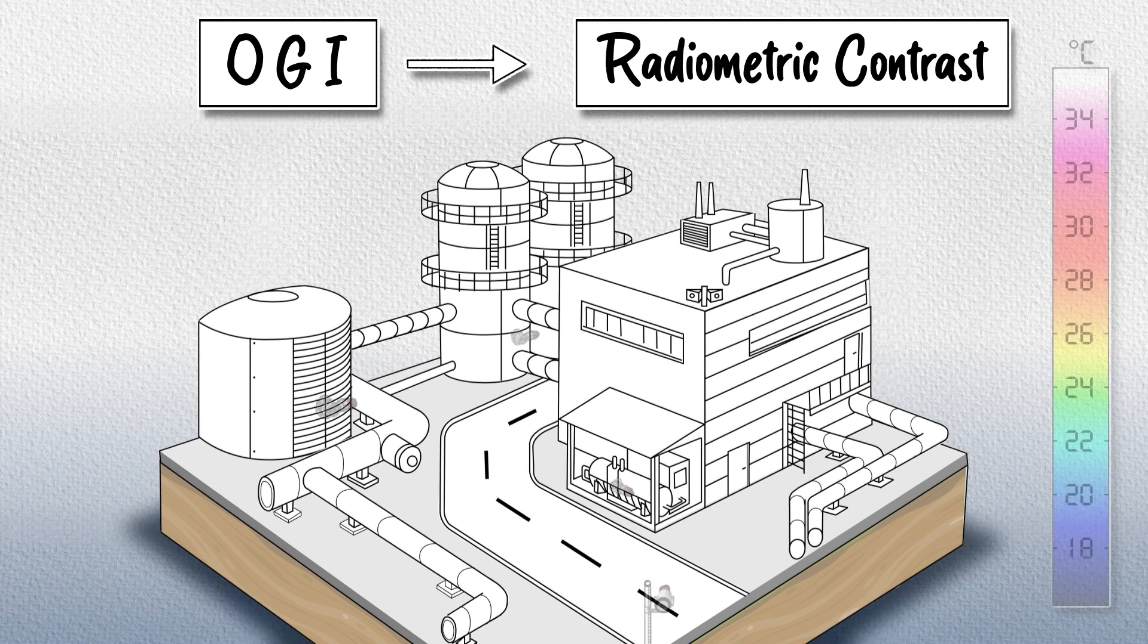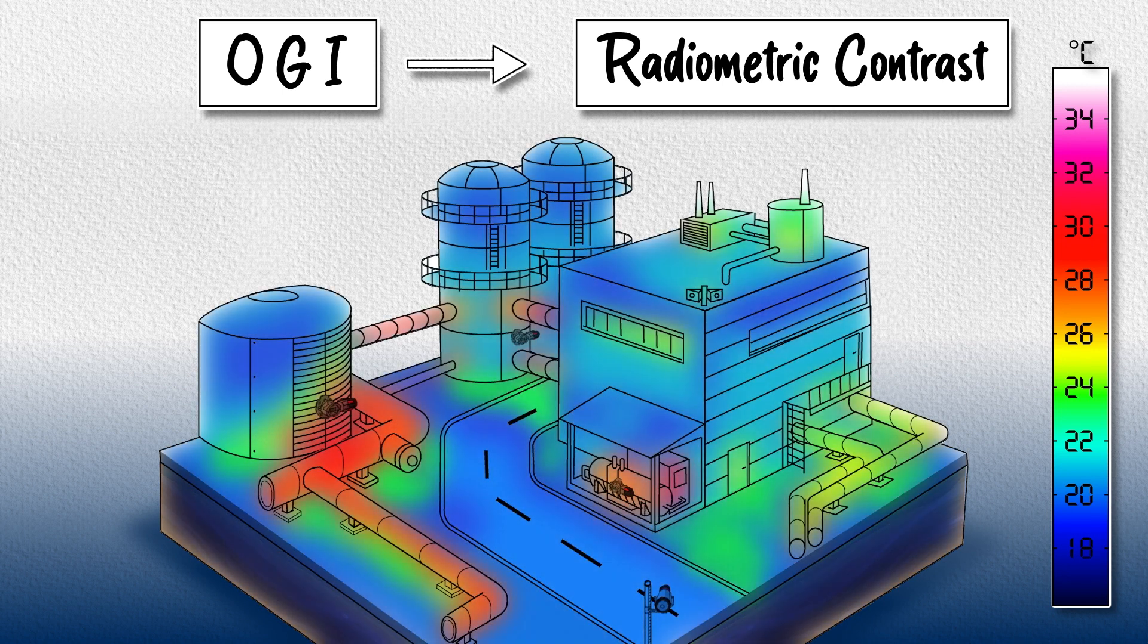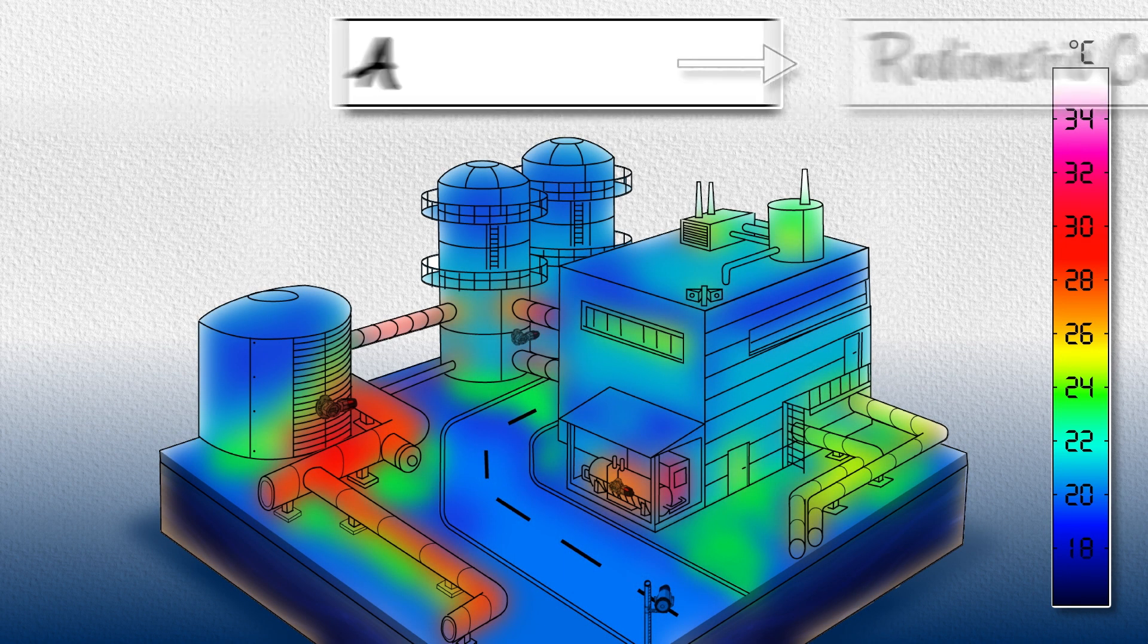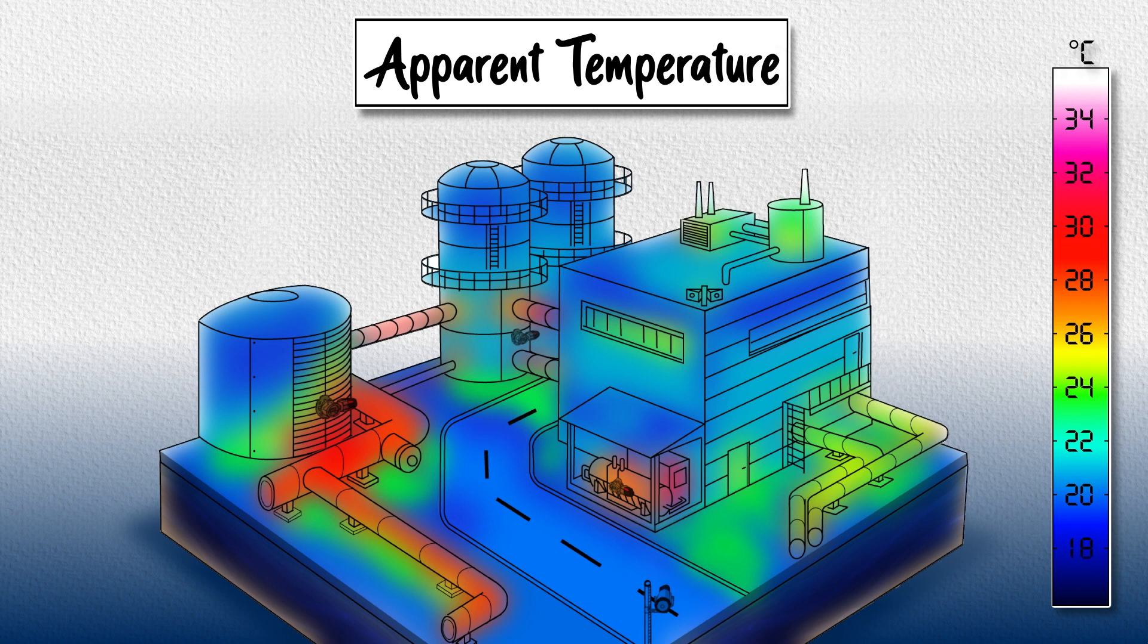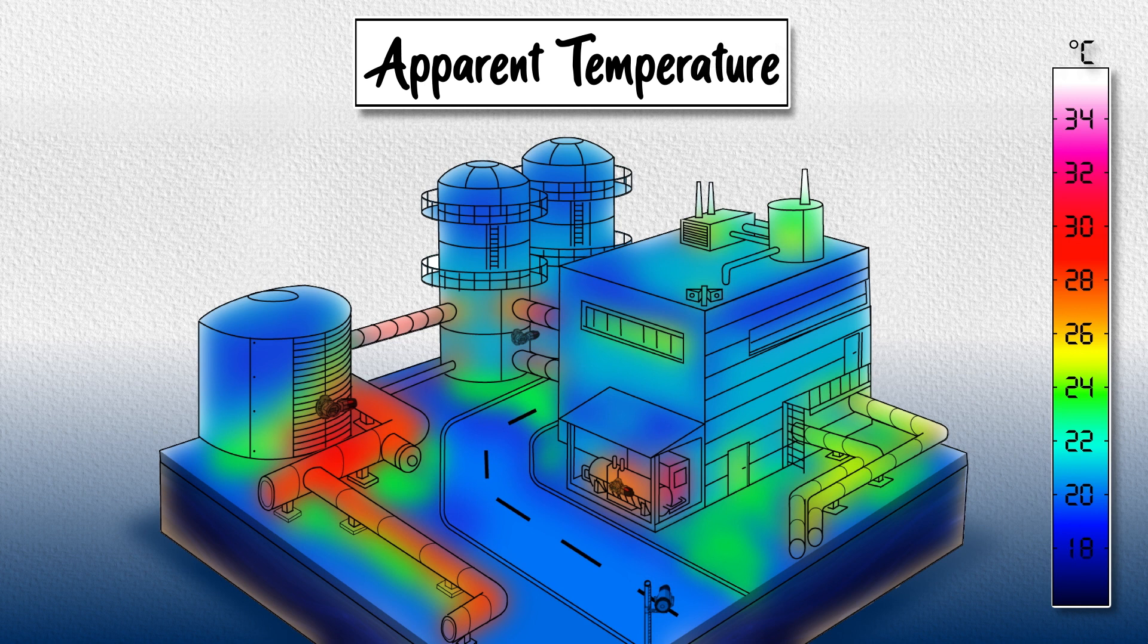Consider an industrial scene where different objects are at different apparent temperatures. Apparent temperature is what an infrared camera will measure when looking at an object. Apparent temperature differs from thermometric temperature—it's lower by some amount. It is typical for the lowest temperature in the scene to be close to the ambient air temperature.